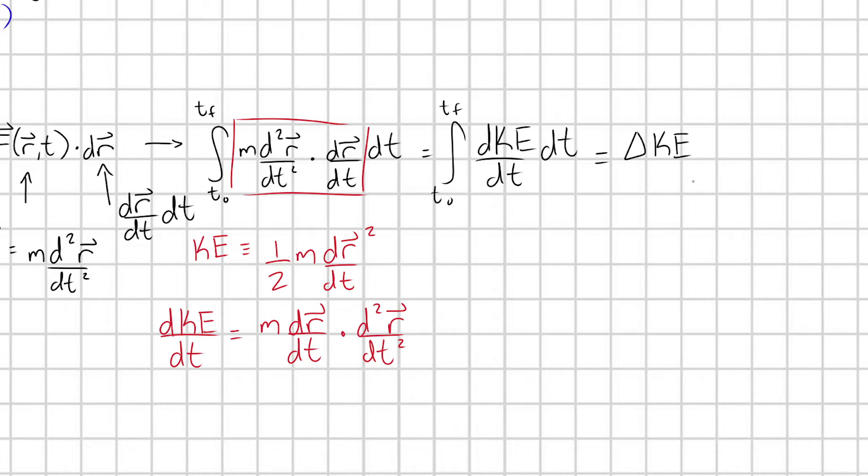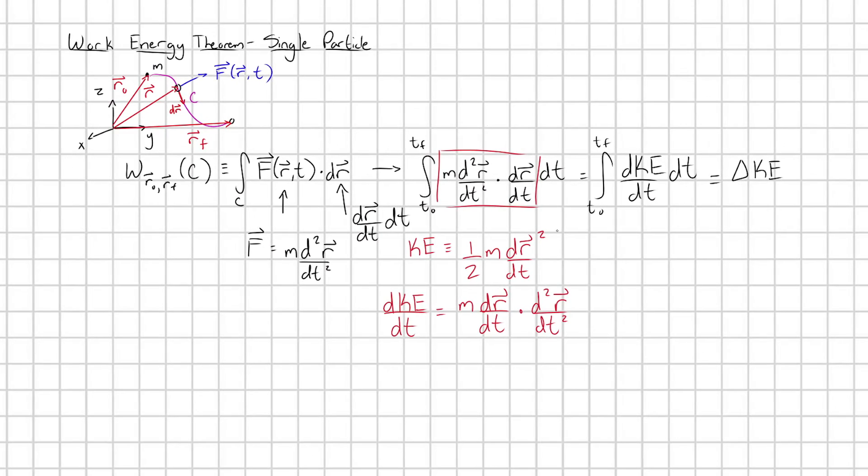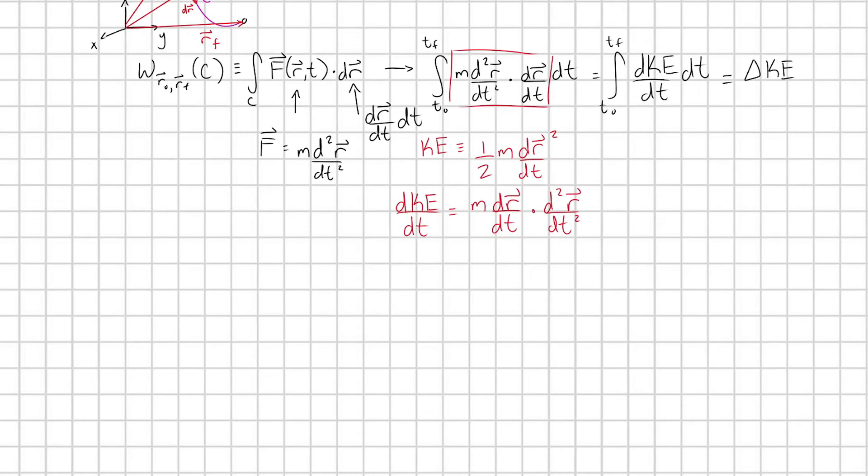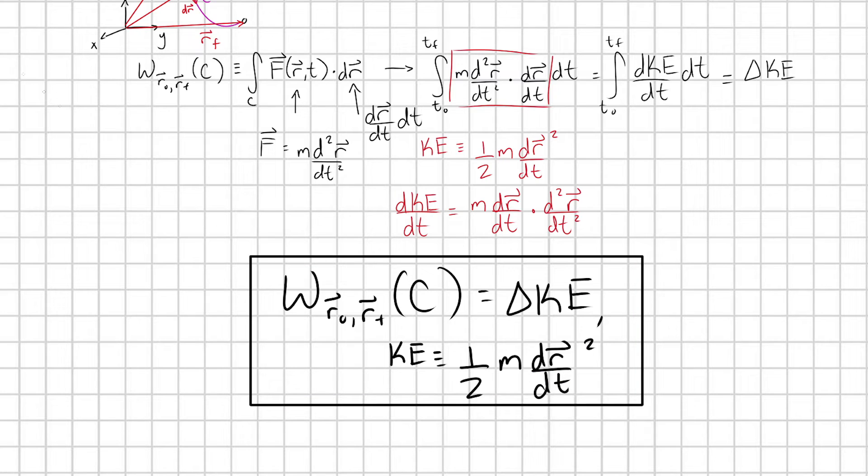And so now we can rewrite out this integral again. Integral of t naught to t final, dke dt dt. And now that we're in this form, we can very clearly see that this is the delta in my kinetic energy. By integrating this, we're finding the change in our kinetic energy. So now you can see what we've done here. We've related our work done on our particle as it travels through this path to the change in this parameter kinetic energy. And that is the work-energy theorem. So let me go ahead and write this out nice and big. The work done on my particle from r naught to r final by taking this path C is equal to its change in kinetic energy. Where kinetic energy, as we defined above, kinetic energy is defined as one half m times effectively v squared. This is just your velocity right there. So let me go ahead and box this guy up. This guy here is our work-energy theorem.